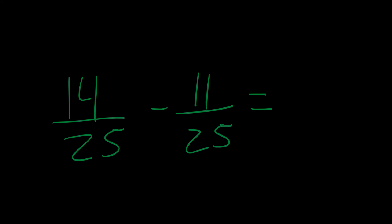In this problem, I have 14 divided by 25 minus 11 divided by 25. Because they have a common denominator of 25, my answer will have a common denominator of 25. 14 minus 11 is 3, so the answer will be 3 divided by 25.